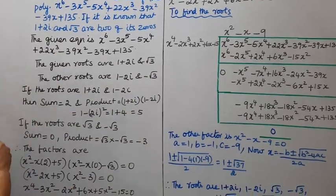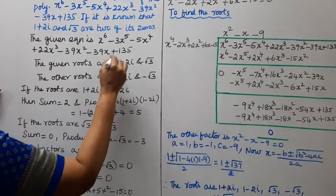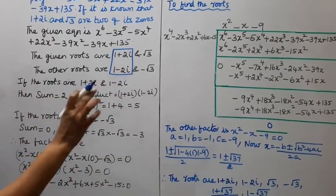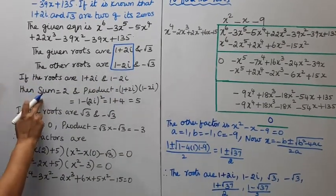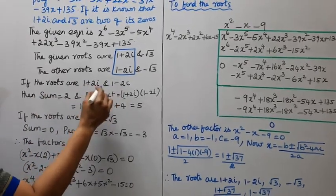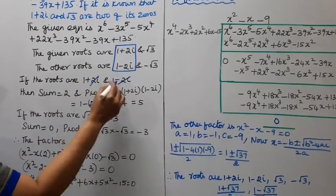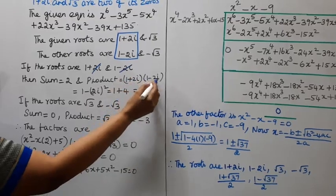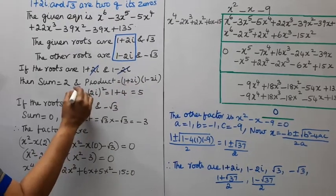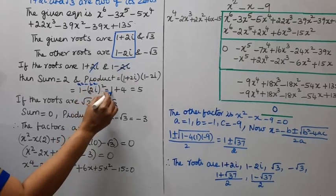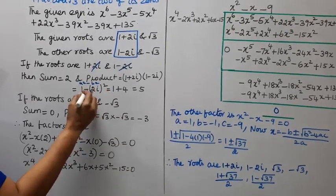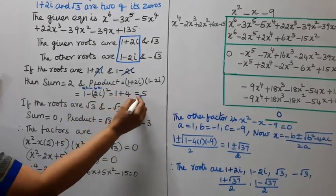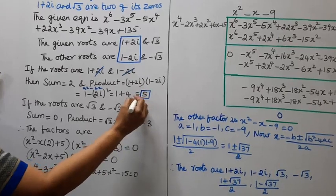If the roots are 1+2i and 1-2i, we form a quadratic factor. The sum of these roots: the 2i and -2i cancel, giving 1+1 = 2. The product: (1+2i)(1-2i) = a²-b² = 1² - (2i)² = 1 - 4(-1) = 1+4 = 5. So sum is 2 and product is 5.